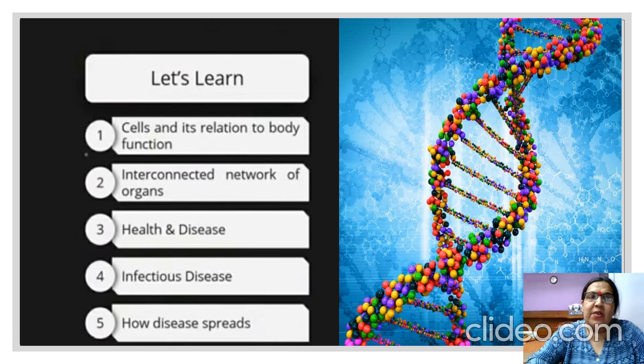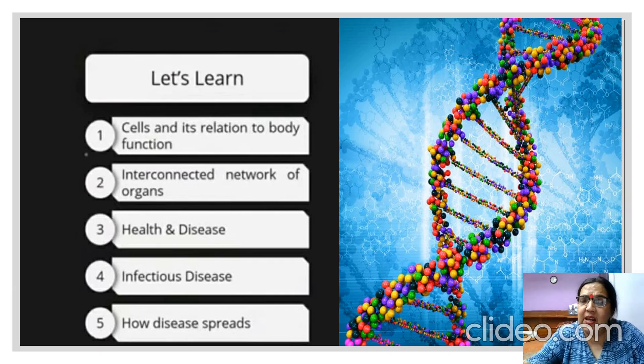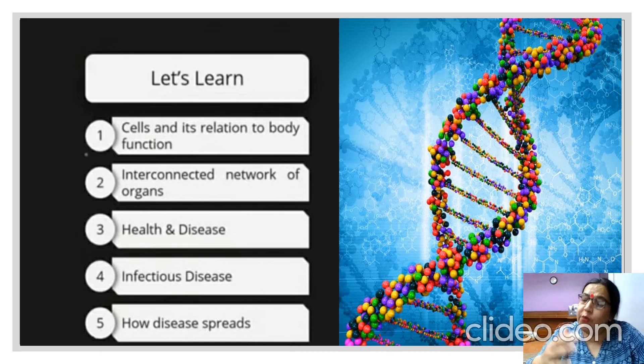Number one: cells and its relation to the body function. The cells join together to form tissues. Tissues join together to form organs. Organs join together to form organ systems. And finally the different organ systems form an organism.